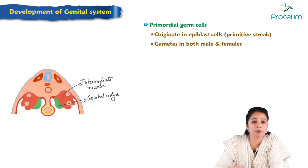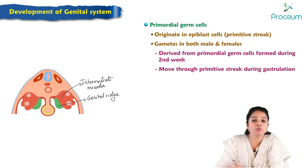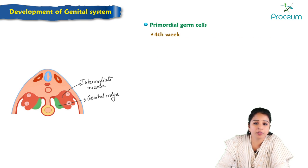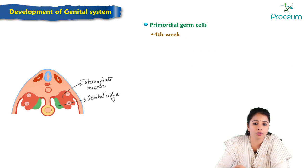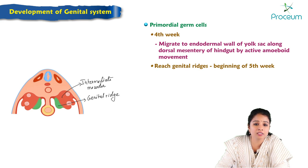Gametes in both male and female are derived from primordial germ cells that are formed during the second week of development. They then move through the primitive streak during gastrulation — that is, during formation of the trilaminar germ disc — and migrate to the wall of the yolk sac. During the fourth week, these primordial germ cells, present in the endodermal wall of the yolk sac, migrate along the dorsal mesentery of the hindgut by active amoeboid movements and reach the genital ridges at the beginning of the fifth week.